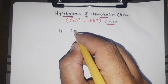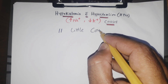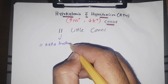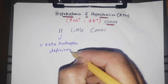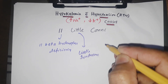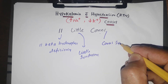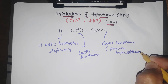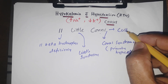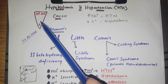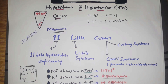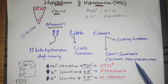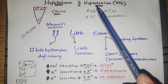Hypokalemia associated with hypertension — the causes can be remembered using the mnemonic '11 little cons.' From '11' we get 11-beta hydroxylase deficiency, from 'little' we get Liddle syndrome, and from 'cons' we get Conn syndrome (primary hyperaldosteronism) and Cushing syndrome. These are the causes of hypokalemia with hypertension.